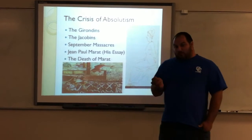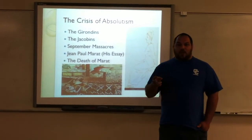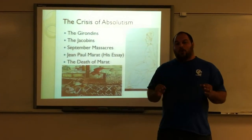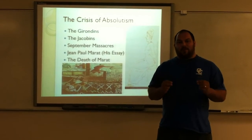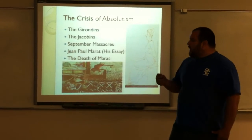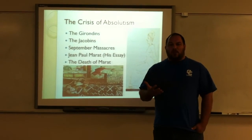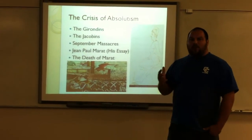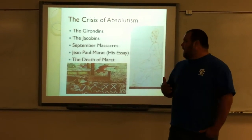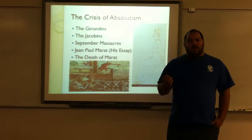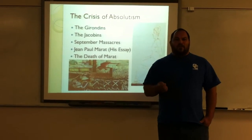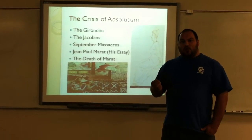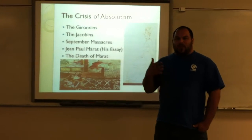Absolutism became an absolute problem. The Girondins and the Jacobins were two groups that formed during the Revolution period. Girondins were those who were loyal to King Louis XVI even after he had been imprisoned by the Third Estate. The Jacobins were those who wanted to get rid of Louis XVI and wanted to get rid of absolutism. These two groups were at odds throughout the Revolution, and it led to some pretty nasty events — one of the nastiest being the September Massacres. During this time, a group of Jacobins slaughtered clergy and nobility, almost 1,200, and it led to major problems.